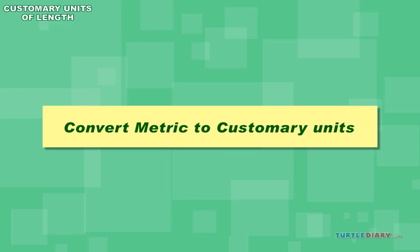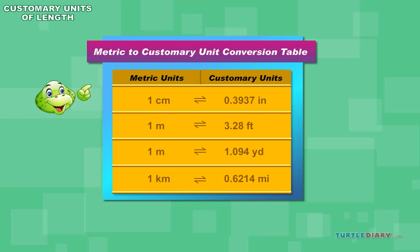Convert metric to customary units. Here is the conversion table from metric to customary units. 1 centimeter equals 0.3937 inches. 1 meter equals 3.28 feet. 1 meter equals 1.094 yards. 1 kilometer equals 0.6214 miles.